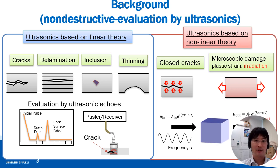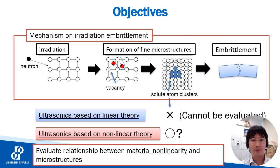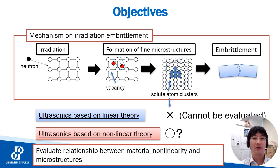The name of the new method is the non-linear ultrasonic method. The degree of embrittlement must be evaluated for the long-term use of nuclear reactors. This embrittlement is caused by formation of fine microstructures in the material due to neutron irradiation. However, this microstructure is too small to be evaluated by conventional ultrasonic technique. In this study, we attempt to evaluate the microstructure using non-linear ultrasonic methods. Therefore, the objective of this study is to evaluate the relationship between material non-linearity and microstructural changes.